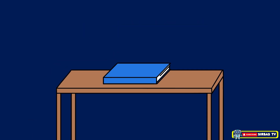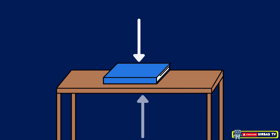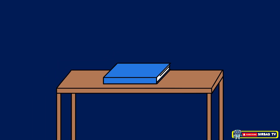Another example is a book on a table. A book rests quietly on a table. Gravity pulls it downward, but the table pushes upward with an equal force. Since these two forces are equal and opposite, they balance each other. That's why the book doesn't move — it is perfectly still under balanced forces.